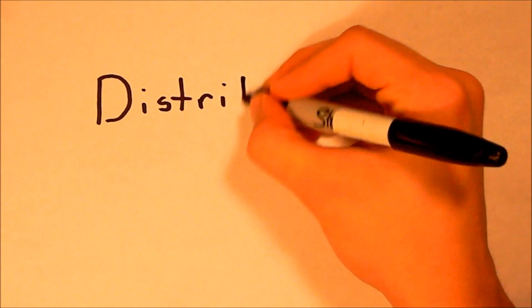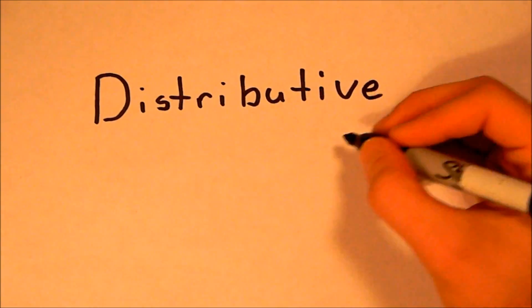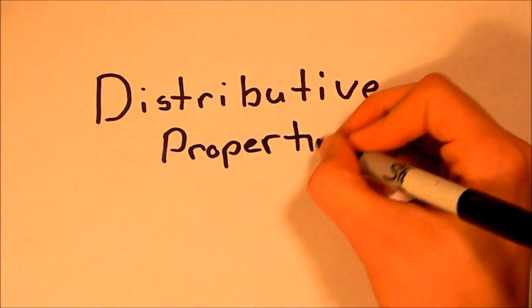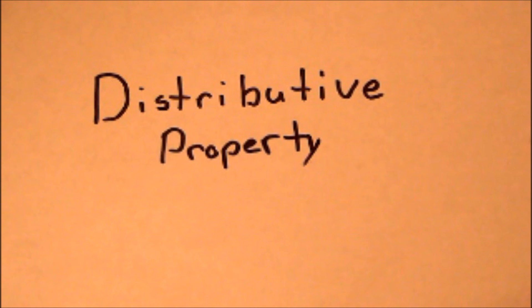Today's lesson is on the distributive property. The distributive property simply states that when multiplying a quantity, you must multiply each term of that quantity. Each term is separated by either a plus or a minus sign.